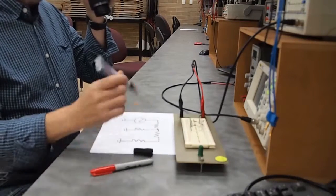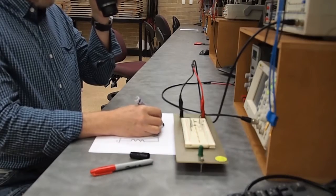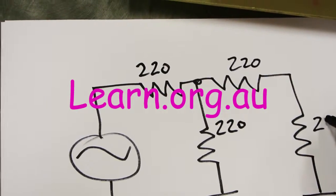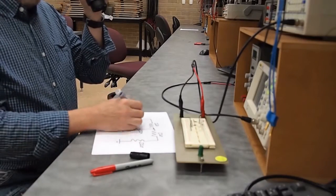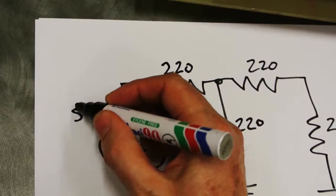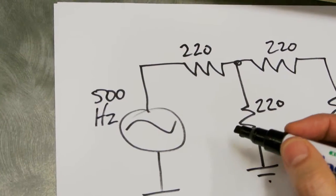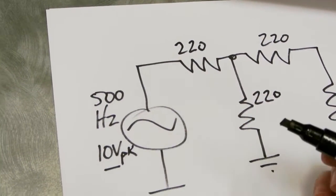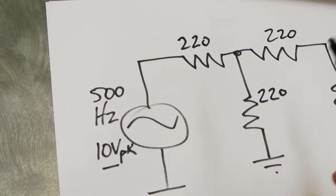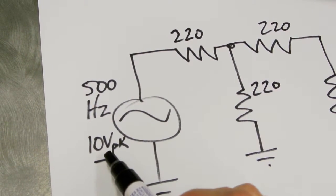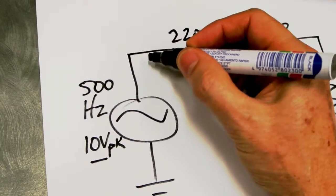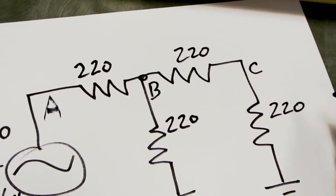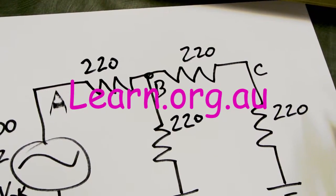Just to put some values onto what we're working with today, these are all 220 ohm resistors. 220, 220, 220 and 220 ohms. We're working with a frequency of 500 hertz and we need a voltage of 10 volts peak. It's very important that we work with a peak voltage here so that we can then later on do the conversions at the different points: Point A, Point B and Point C to convert back into RMS and check against the table that we did earlier in class.